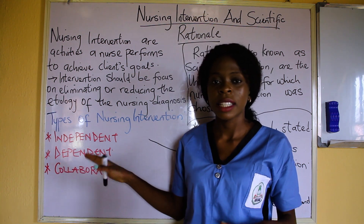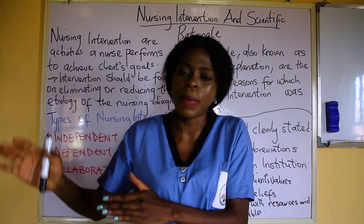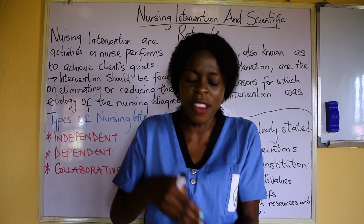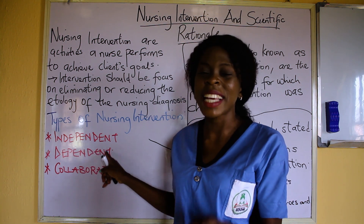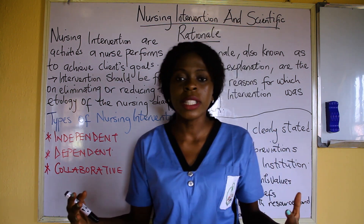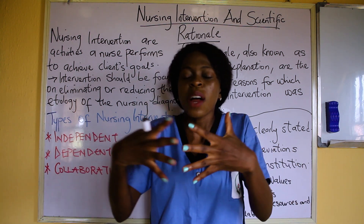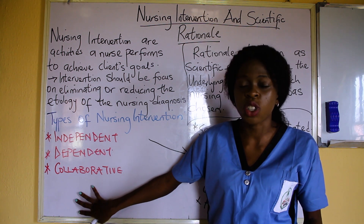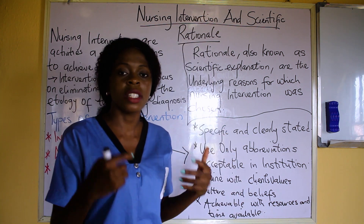The second type is dependent intervention. It means that you don't have the right to do it on your own — you have to depend on the doctor or other healthcare practitioners to carry out that duty. For example, an intervention that says 'give prescribed medication' is a dependent nursing intervention, because you are giving what the doctor has prescribed. The third type is collaborative intervention, which means you are doing it together — joining the nutritionist, dieticians, or radiographers. These are the three types: independent, dependent, and collaborative nursing intervention.